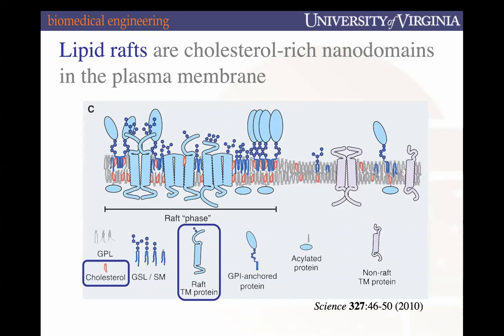Finally, there are cholesterol-enriched portions of our cell membrane that we typically refer to as lipid rafts. These cholesterol-rich lipid rafts are fascinating regions where there are highly active areas of signal transduction. GPI-anchored proteins and various raft-associated transmembrane proteins are found there. The key takeaway: regions of the cell membrane enriched for cholesterol are called lipid rafts — small domains where lots of signaling occurs.